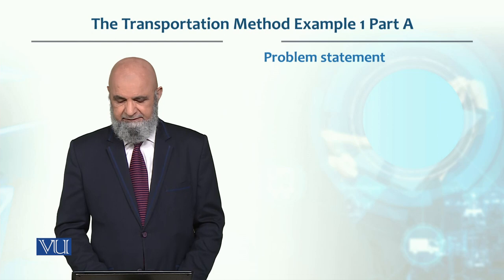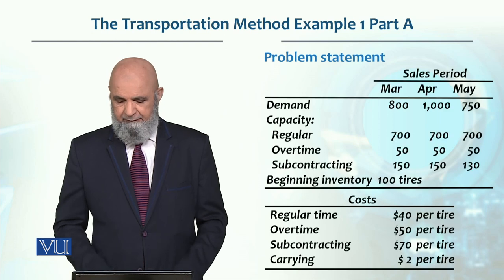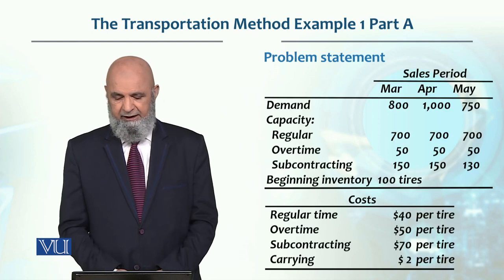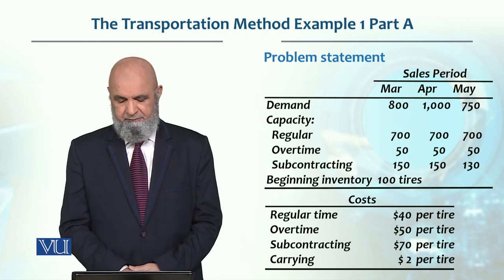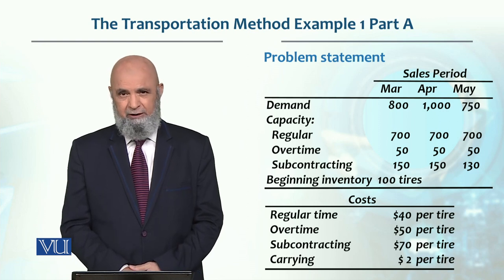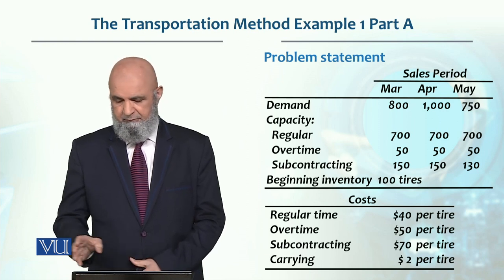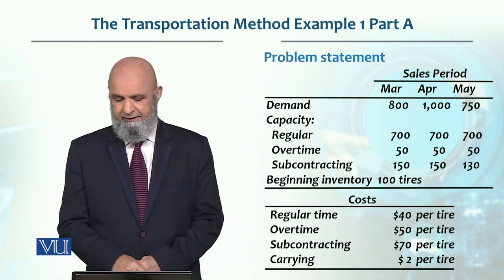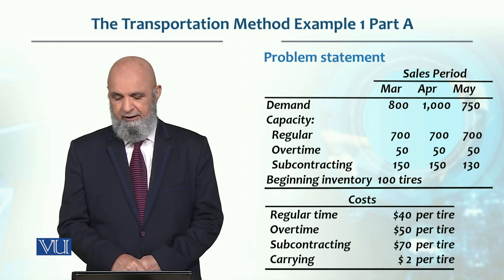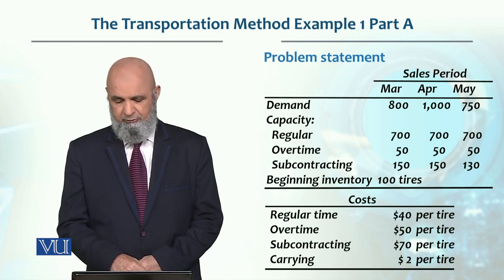We have the first row showing demand. Each month is given: 800 in March, 1,000 in April, and 750 requirements in May.